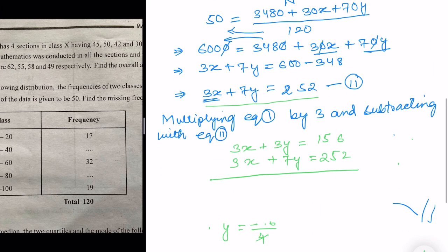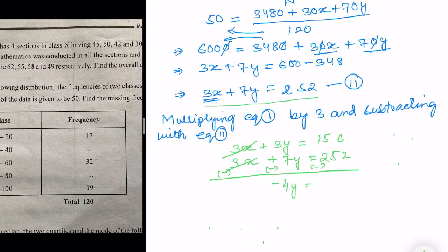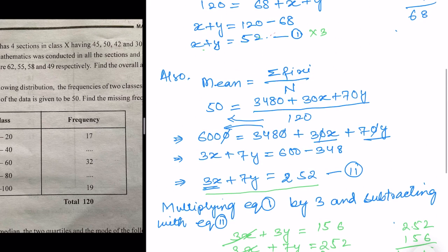Changing signs and subtracting: 3x cancels, leaving 3y − 7y = −4y, and 156 − 252 = −96. So −4y = −96, which gives y = 96 / 4 = 24.